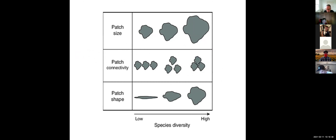If we look at three different ways patches occur in the landscape — patch size, patch connectivity in terms of relationship to each other, and patch shape — species diversity will increase as you go from smaller to larger patches. Patch connectivity also increases species diversity, partly because of the idea of ideal habitat versus effective habitat, as we explored in the GIS project with the chipmunks. Better connectivity means species can jump from patch to patch, giving greater species diversity and more robust populations.